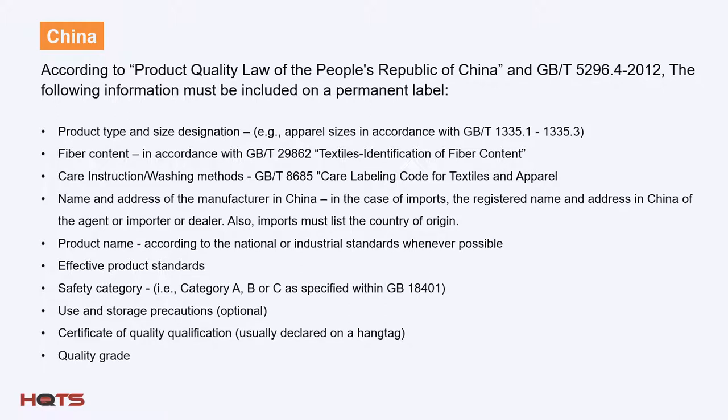In China, the permanent label must be permanent, cannot be detached, and must be legible throughout the product's usable lifecycle. The information included must cover: product type and size; fiber content in accordance with GB; care and washing instructions; the name and address of the manufacturer in China; for imported products, the registered name and address of the agent, importer, or dealer and the country of origin; the product name based on national industrial standards; the effective product standards; the safety category as established under GB; use and storage precautions (optional); the certificate of quality qualification declared on the hang tag; and the quality grade.